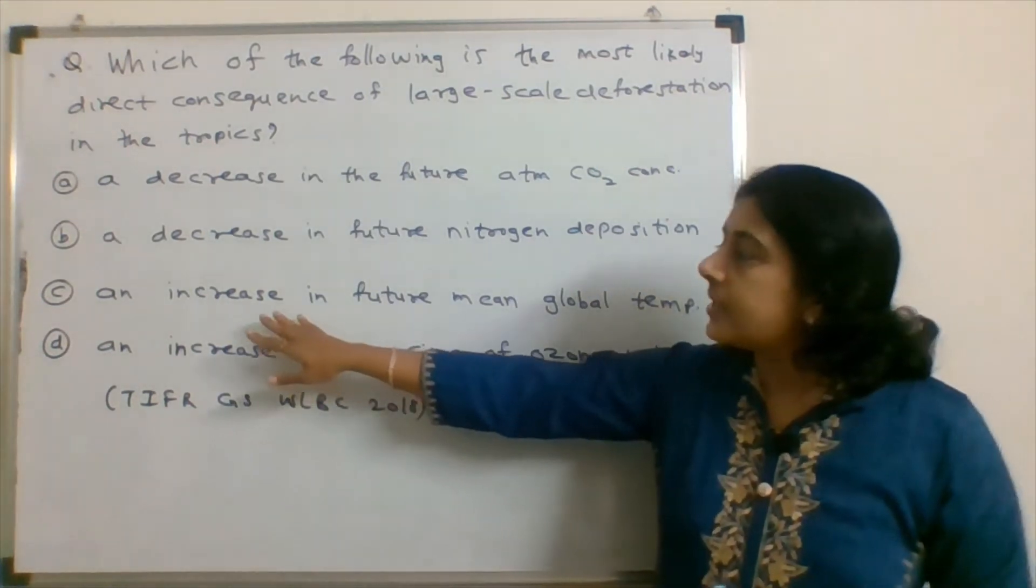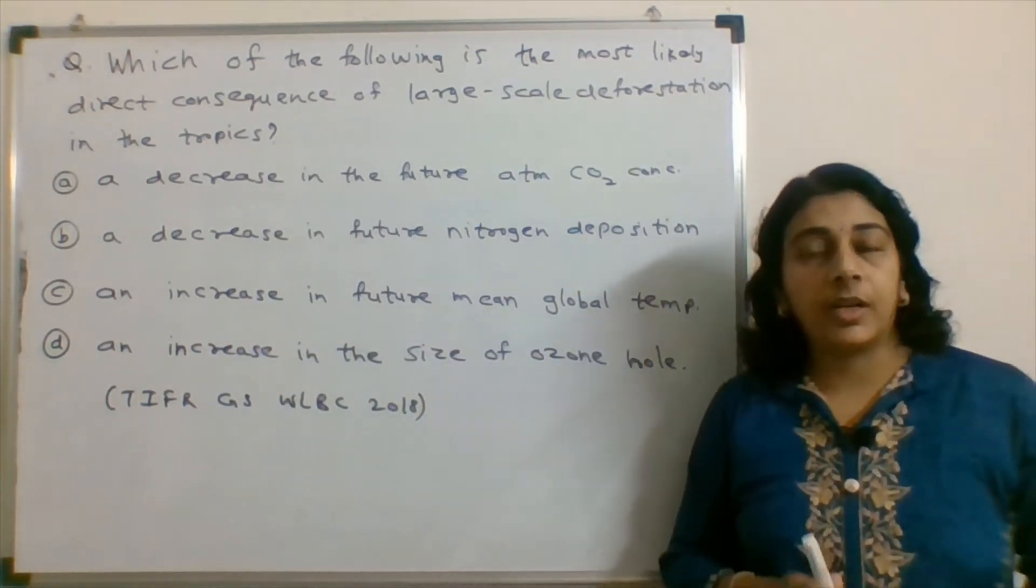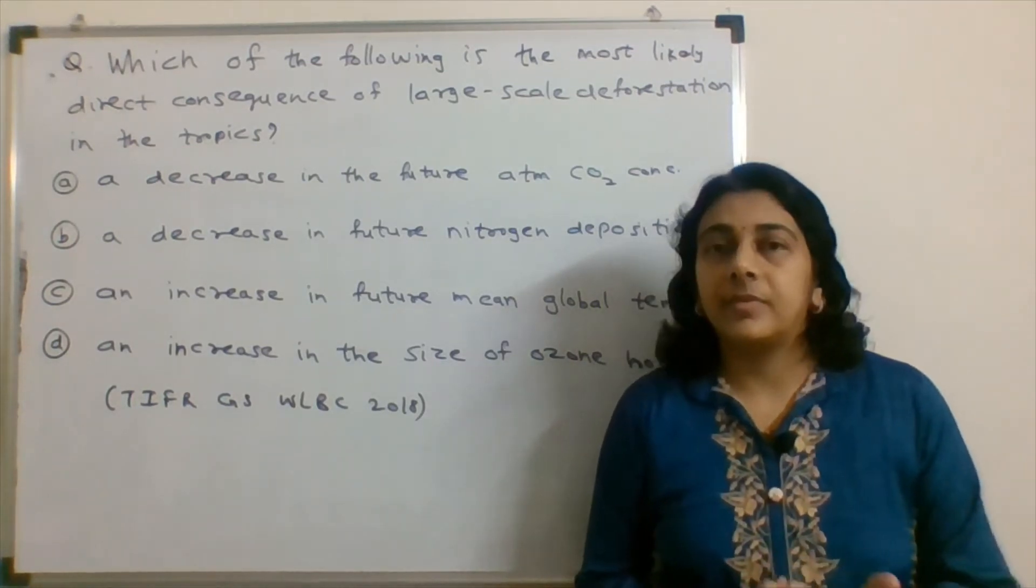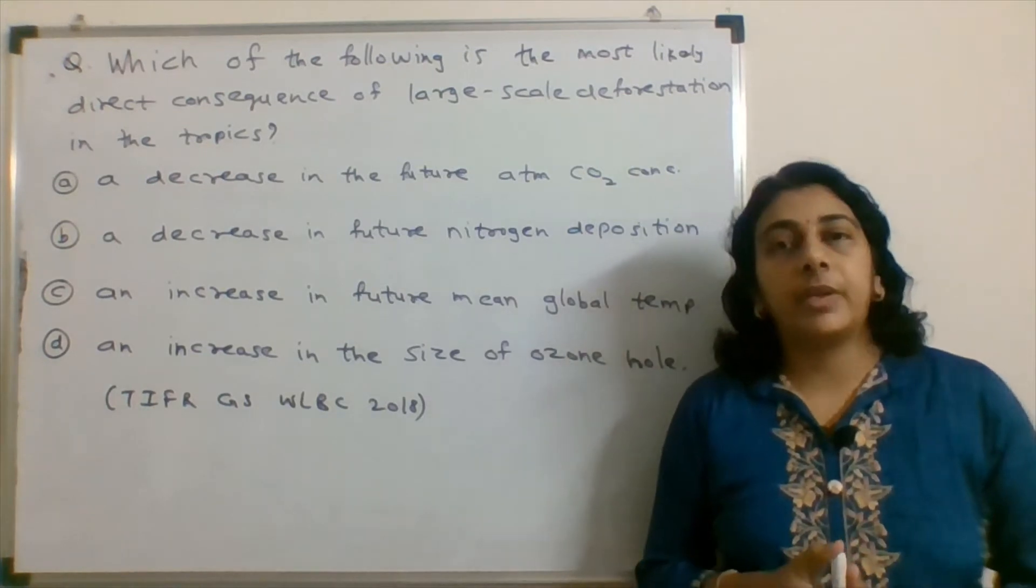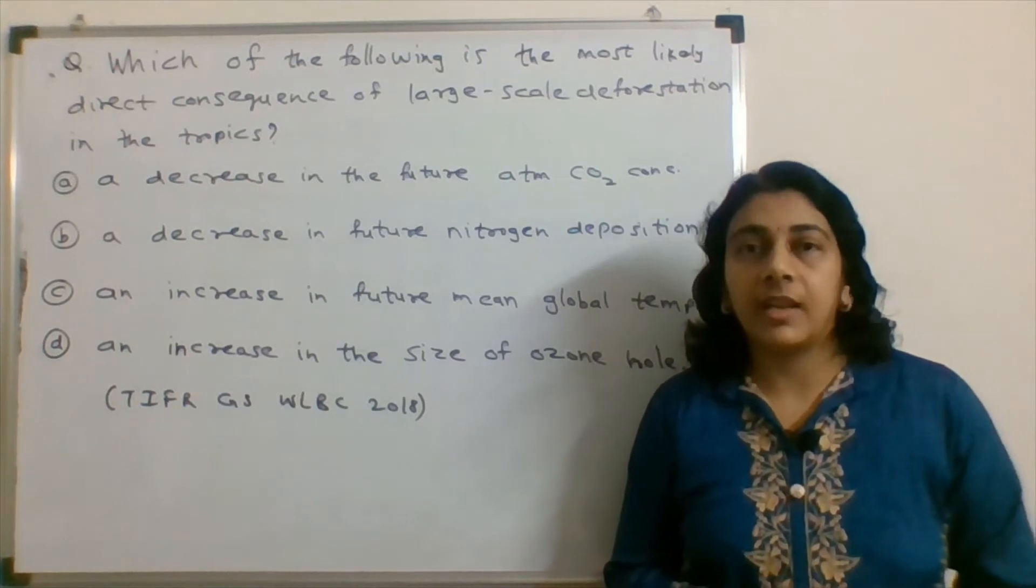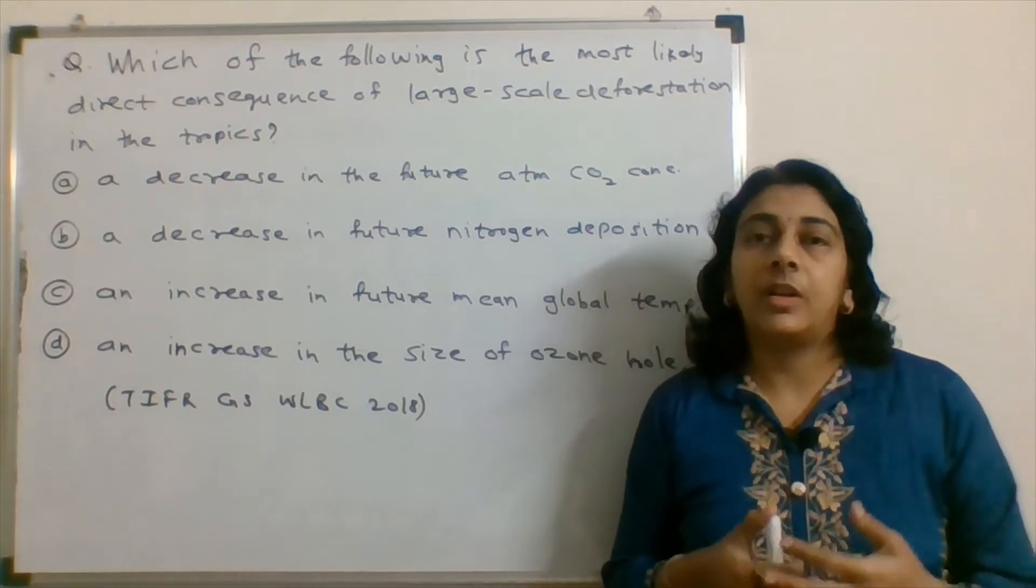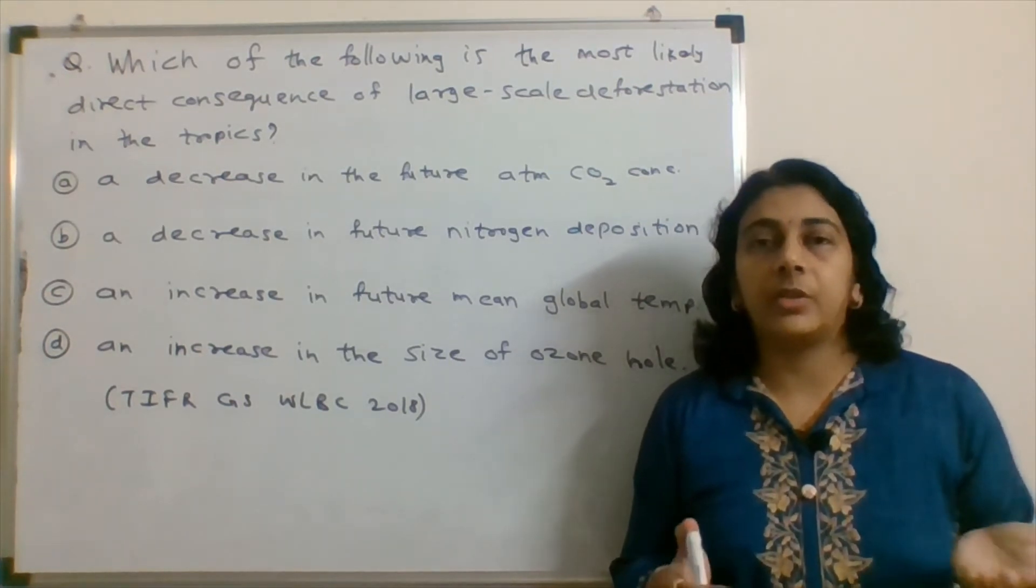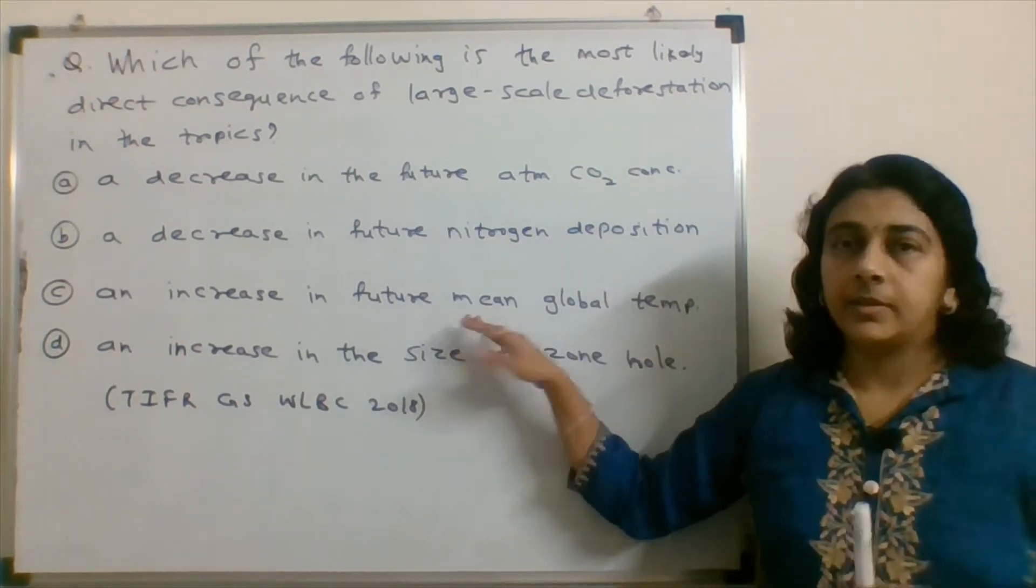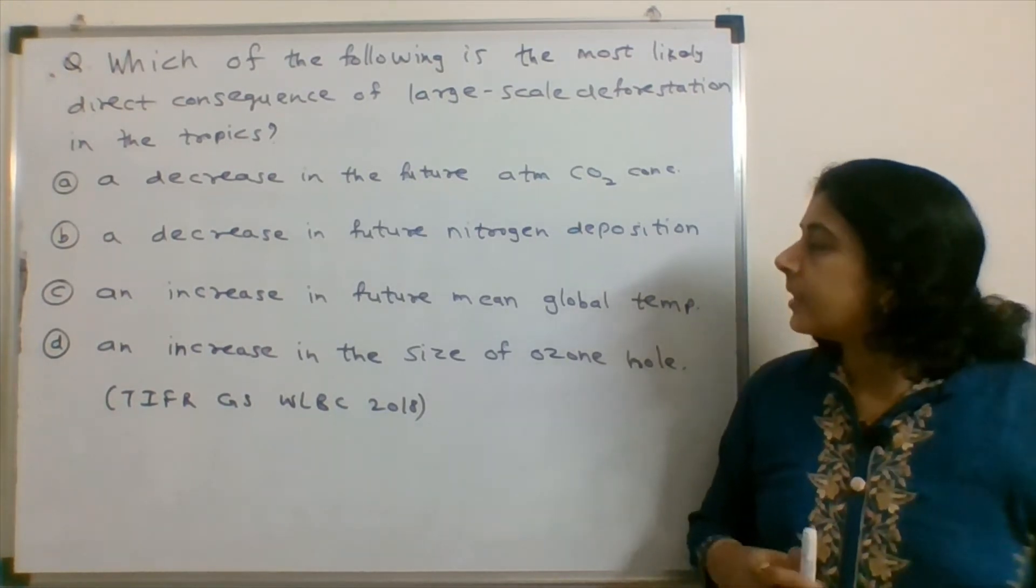The third option says an increase in future mean global temperature. Yes, mean global temperature will increase. This is what we know. Carbon dioxide will increase, and carbon dioxide is a greenhouse gas. If greenhouse gas is growing in the atmosphere, ultimately the temperature of the earth will increase. This is correct - an increase in global temperature is a direct consequence.